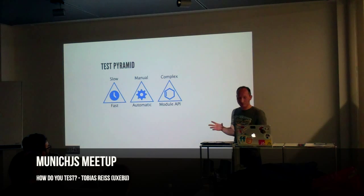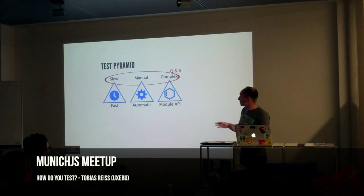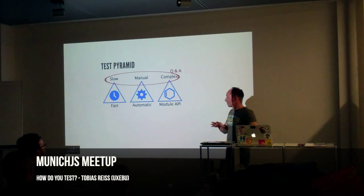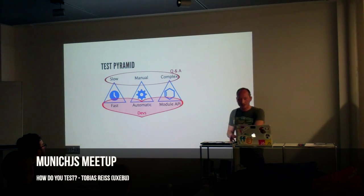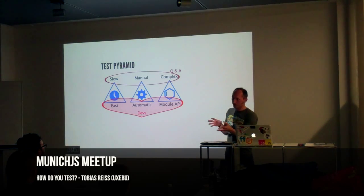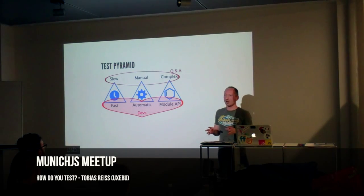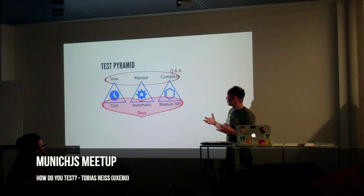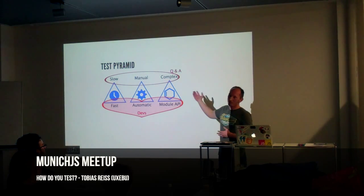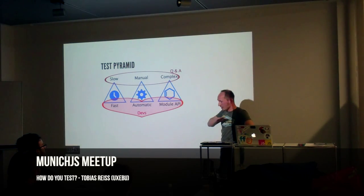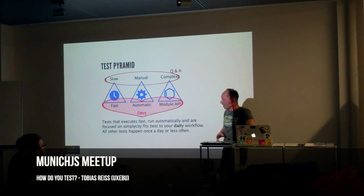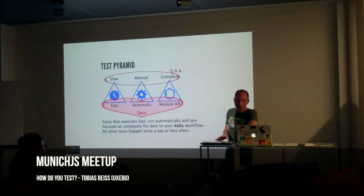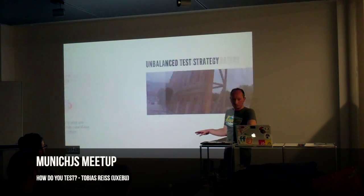So to split them up: slow, manual, and complex tests I'd like to address to QA. And fast, automatic, and unit-based — focused on the module — I'd like to address to devs. Of course, it depends on the resources you have within your company. Sometimes you as a developer are also the QA. A test that executes fast, runs automatically, and focuses on simplicity fits best to your daily workflow. All other tests happen just once a day or less often.